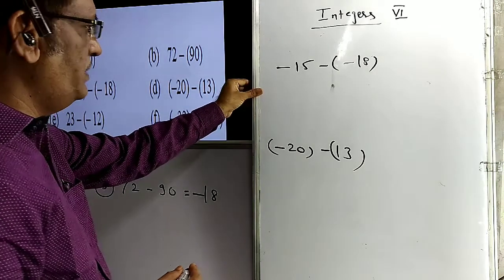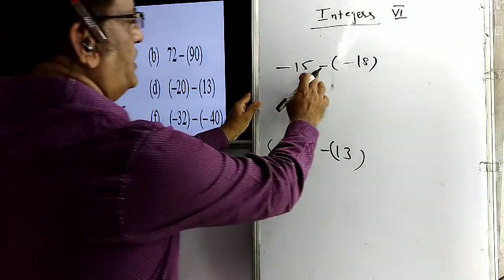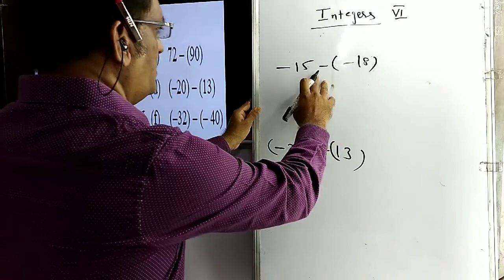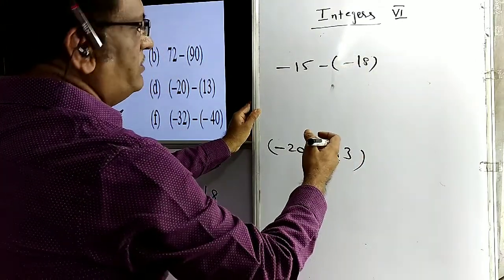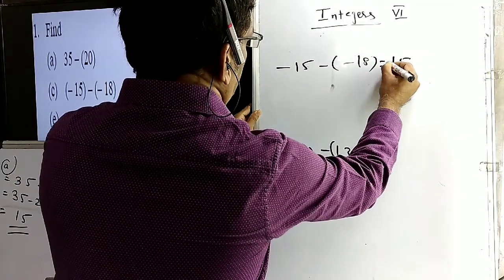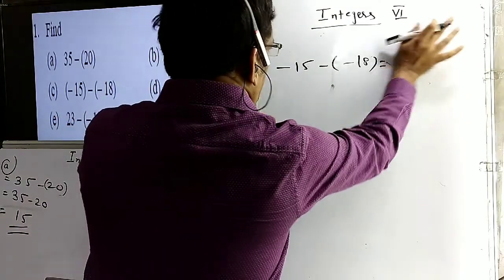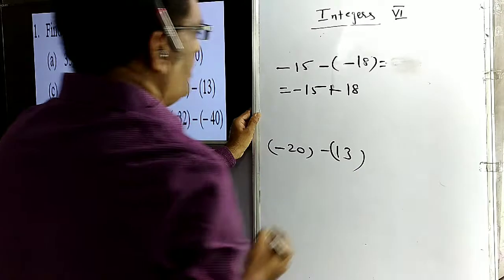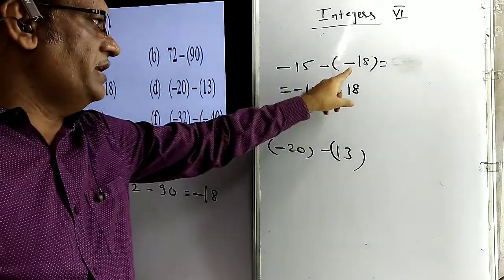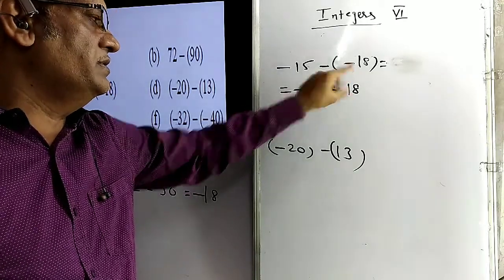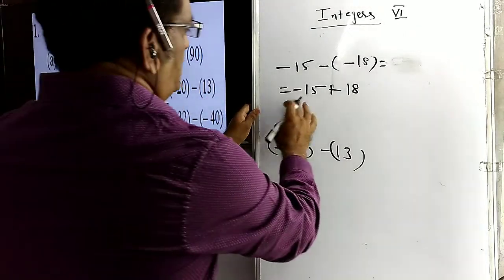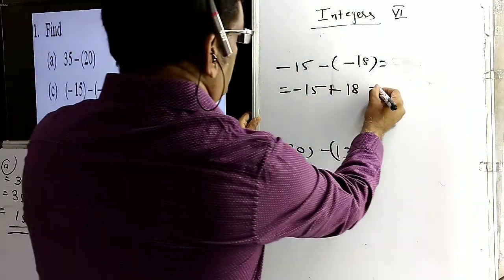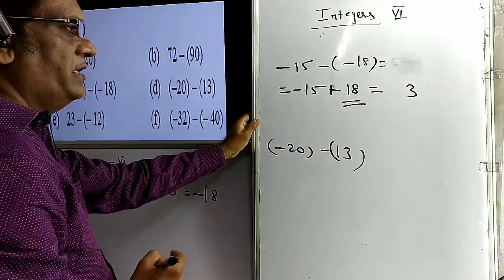The third problem is minus 15 minus of minus 18. First, simplify the bracket. When there is a minus sign outside the bracket, the sign of the term inside becomes different: plus becomes minus, minus becomes plus, because it converts to additive inverse. So it becomes minus 15 plus 18. Plus 18 is the additive inverse of minus 18. Now these terms have different signs, so we subtract: 18 minus 15 equals 3. Since 18 has the larger magnitude, the answer is plus 3.